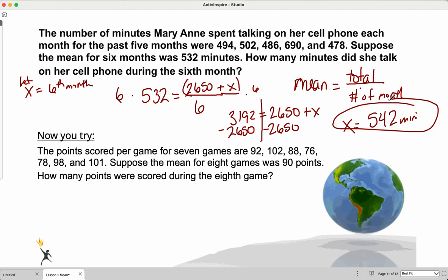All right. Take a second and practice. Try to figure out this next one. So the score per game for seven games is 92, 102, 88, 76, 78, 98, and 101. If the mean for eight games was 90 points, what was the score of the ninth game? Okay. Pause the video. And then you can restart it when you're ready to talk about the answers.